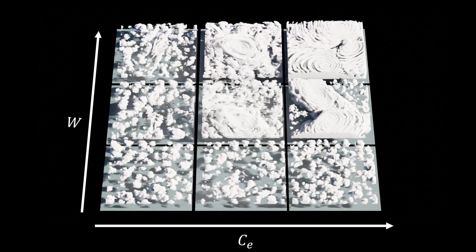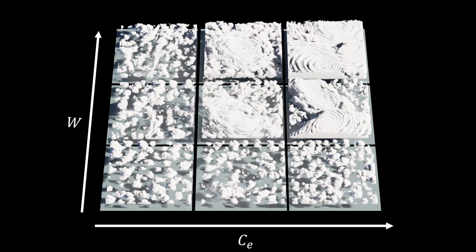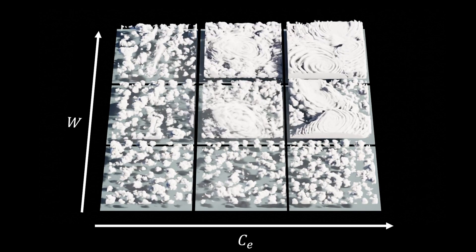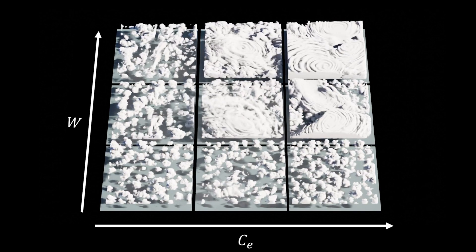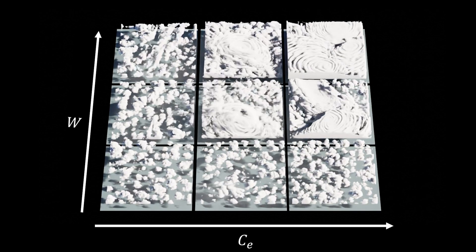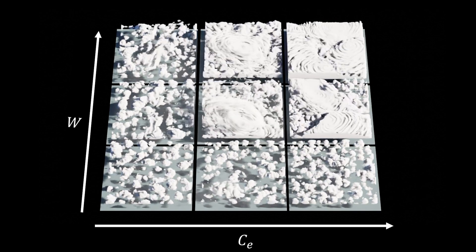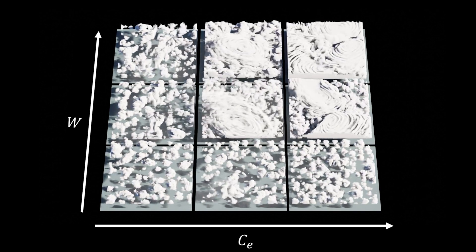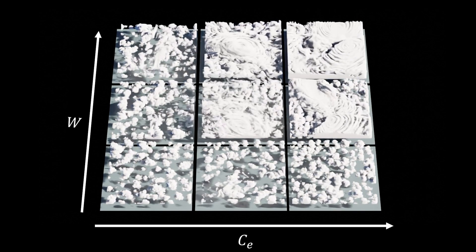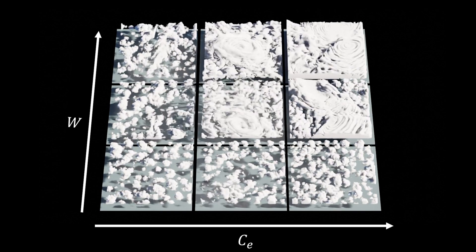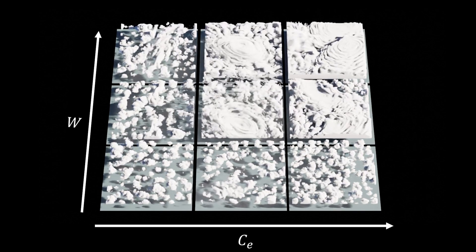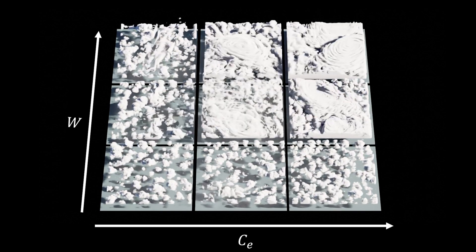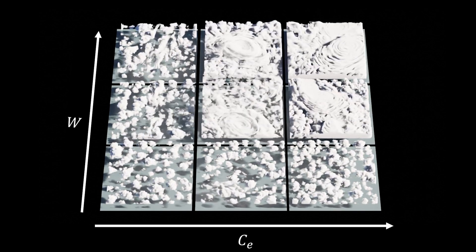The two main parameters are the eddy mixing coefficient CE and the wind shear W. The combination of both increases the likelihood of vortices, which ultimately lead to the formation of rotating storms.